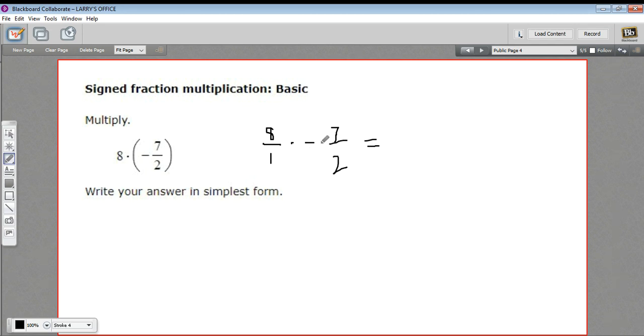For the moment, I'm going to ignore this negative sign and just work on the multiplication part. So I can multiply across the top and multiply across the bottom and get my answer. Although before I do that, it might pay to simplify. I see that 8 is divisible by 2, so I'm going to go ahead and do that.